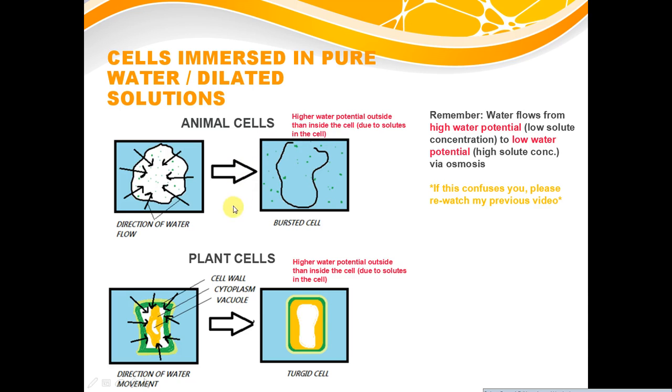What would happen if you put animal cells in very pure or very diluted solutions? First, you need to understand that in a very diluted solution, most likely it's going to have a higher water potential than inside the cell. That's because inside the cell, for both plants and animal cells, they have different stuff dissolved in it.